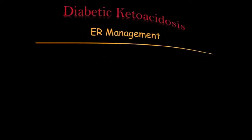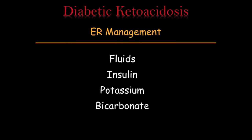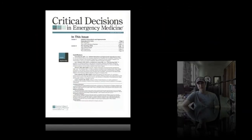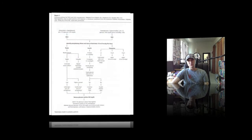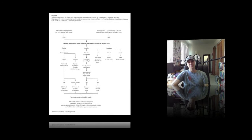Moving on to ER management — it's really simple with DKA. We've got to do a couple of things: we need to give the patient fluids, eventually give them some insulin, and they're going to need some potassium. Very rarely do we need to give bicarb. Just go to UpToDate, type in diabetic ketoacidosis, read all about it — there's an algorithm there that's pretty nice showing how you should treat DKA. I would also suggest reading Critical Decisions in Emergency Medicine from September 2009, which has an article on DKA management with a great graph covering how to give fluids, insulin, and how to replace potassium.